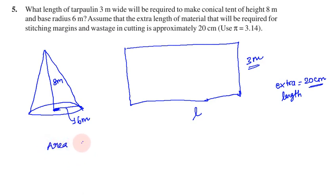It's a conical shape. Area of tarpaulin equals curved surface area of tent. The area of tarpaulin is rectangular shape, so L into B, which is equal to curved surface area of tent. CSA is pi into R into L.